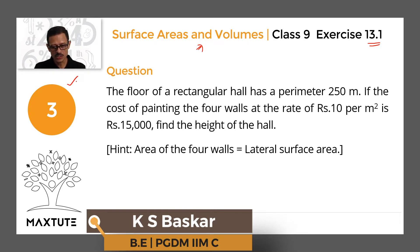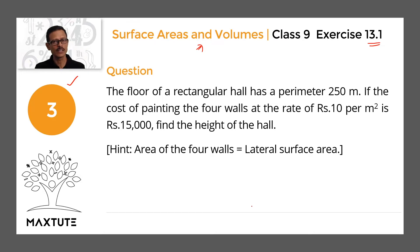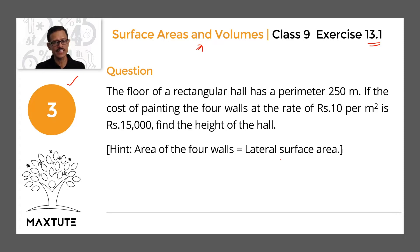The floor of a rectangular hall has a perimeter of 250 meters. If the cost of painting the 4 walls at the rate of 10 rupees per meter square is 15,000 rupees, we need to find out the height of the hall. The hint says that the area of the 4 walls is equal to the lateral surface area of this rectangular cuboid.